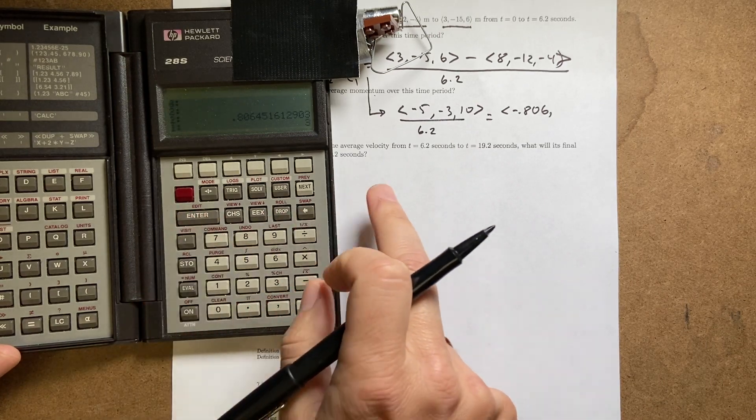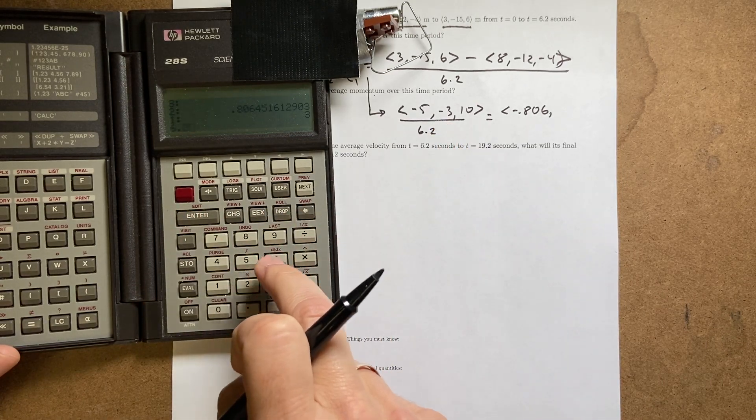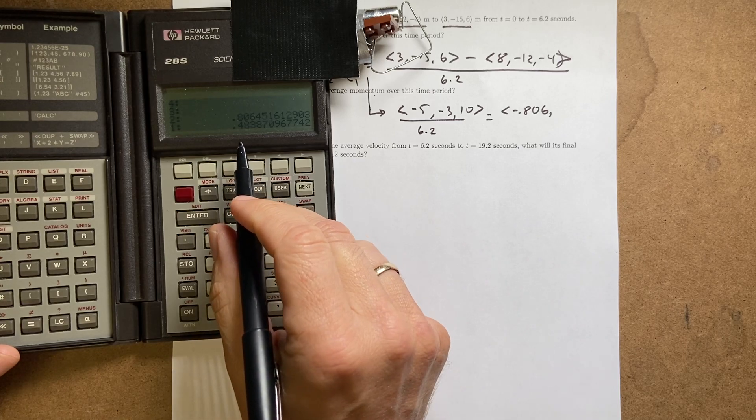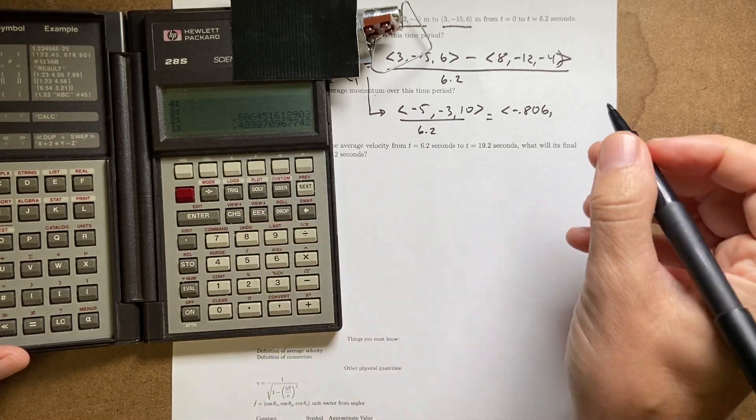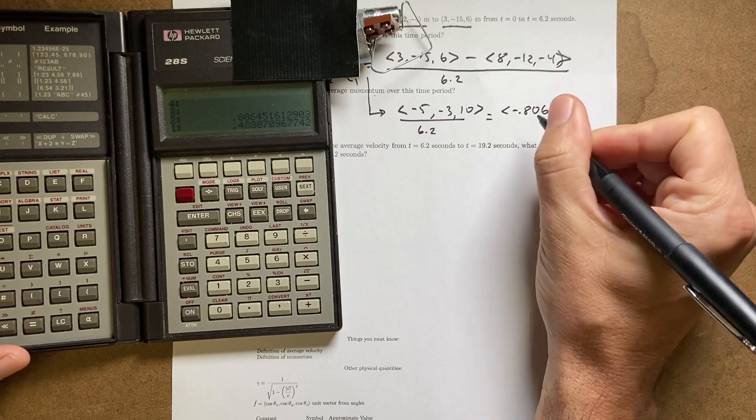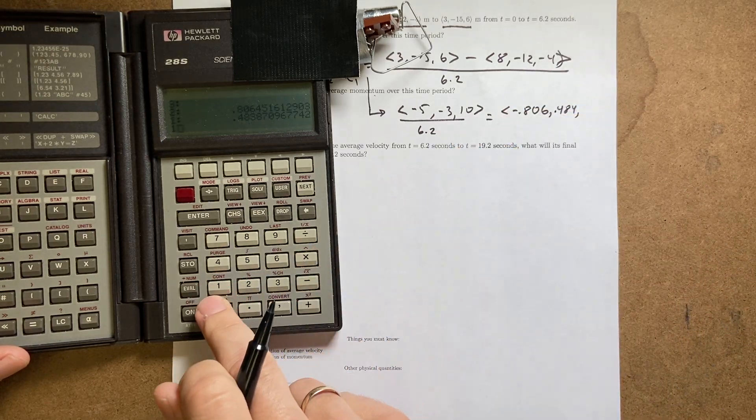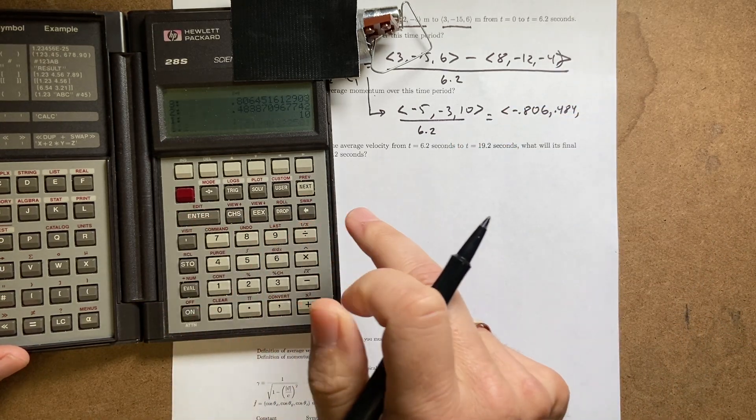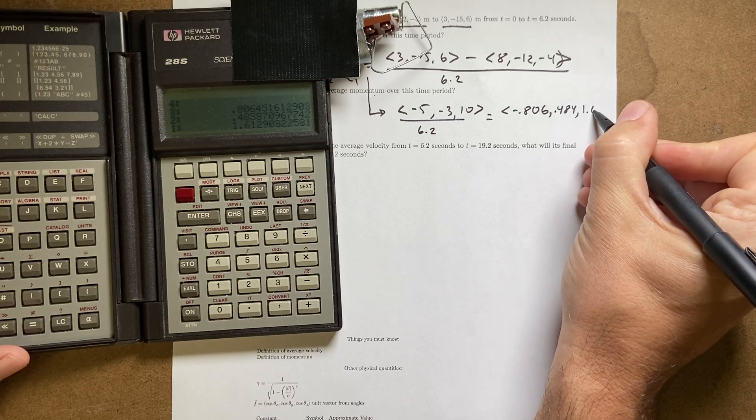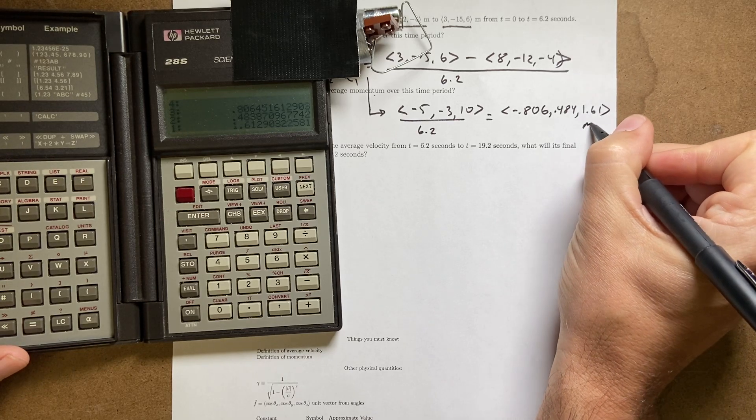Now, 3 divided by 6.2, and that's going to be negative 0.484. And then 10 divided by 6.2, 1.61. And that's meters per second. That's my average velocity.